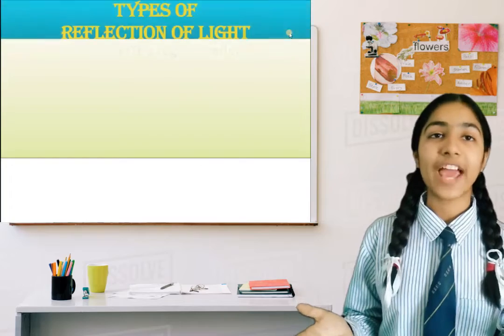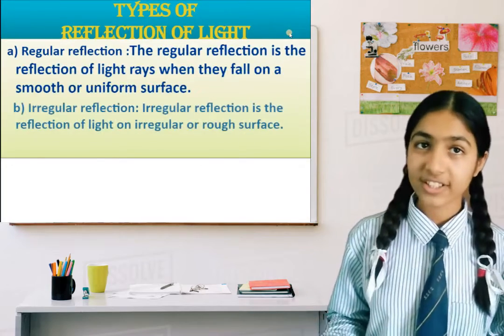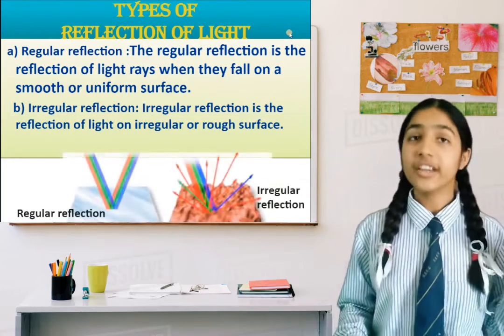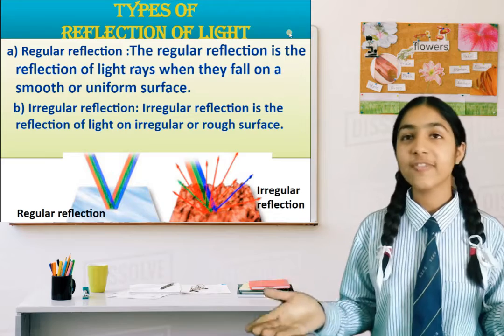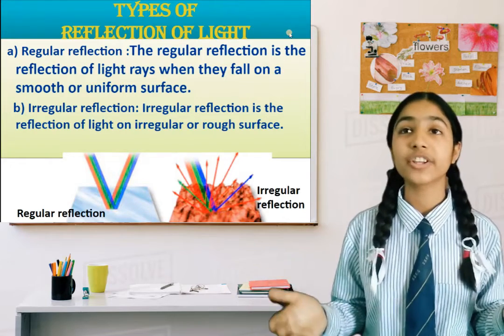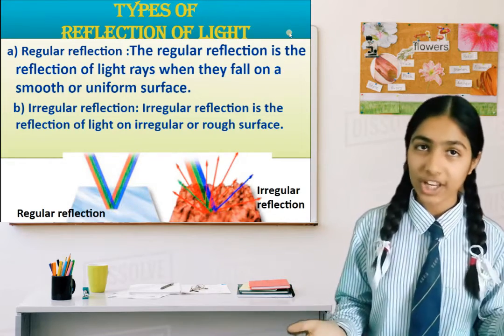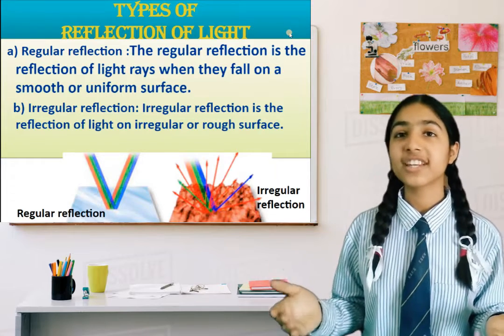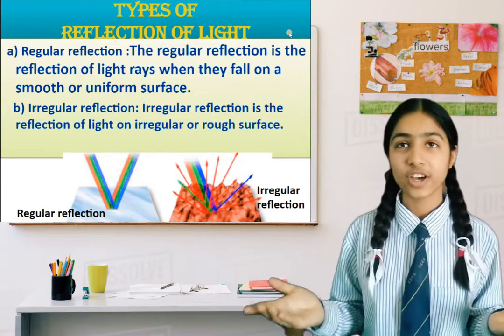There are two types of reflection of light: regular reflection and irregular reflection. Regular reflection is the reflection of light rays that fall on a smooth or uniform surface. Irregular reflection is the reflection of light on an irregular or rough surface.